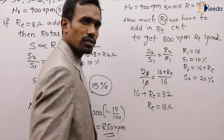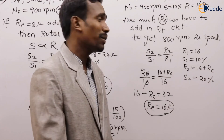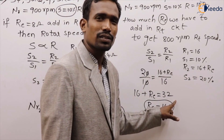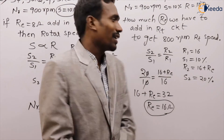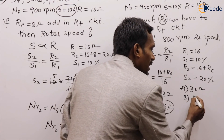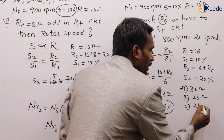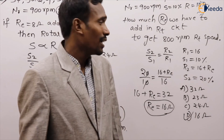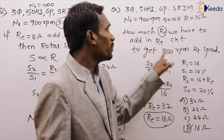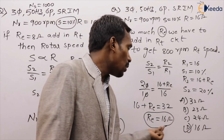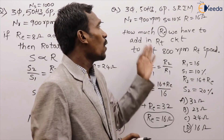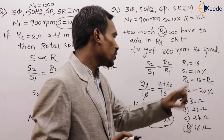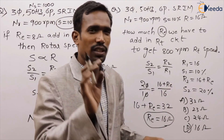Solving: 16 plus extra resistance equals 32, so extra resistance equals 16 ohms. People commonly make the mistake of taking R2 as the answer: R2 equals 32 ohms, and option A is 32 ohms — but that is 100% wrong. The question asks how much extra resistance is added, which is 16 ohms (option D). If they ask for total rotor resistance, the answer would be 32 ohms. Do not make this common mistake.